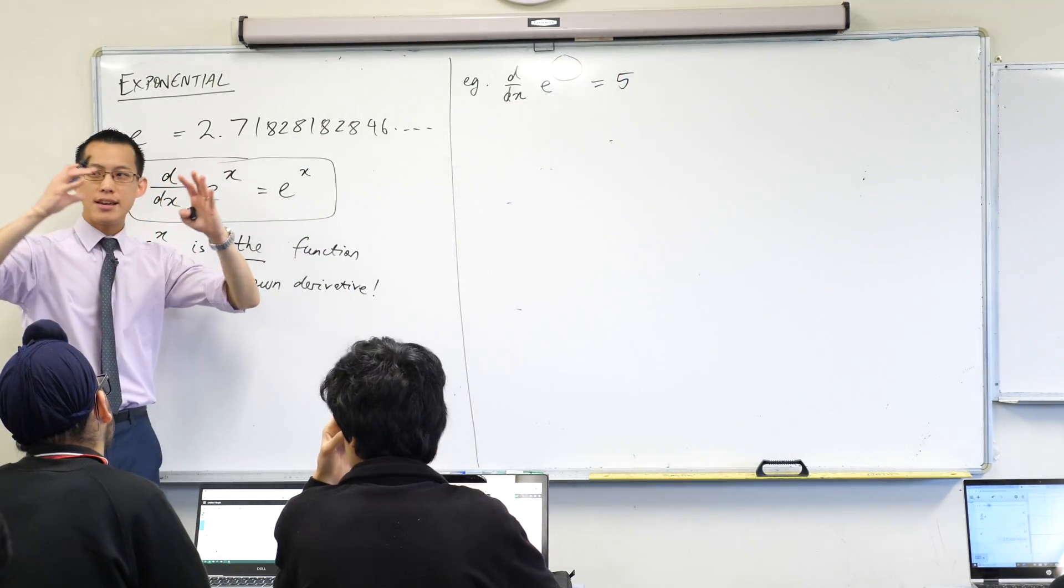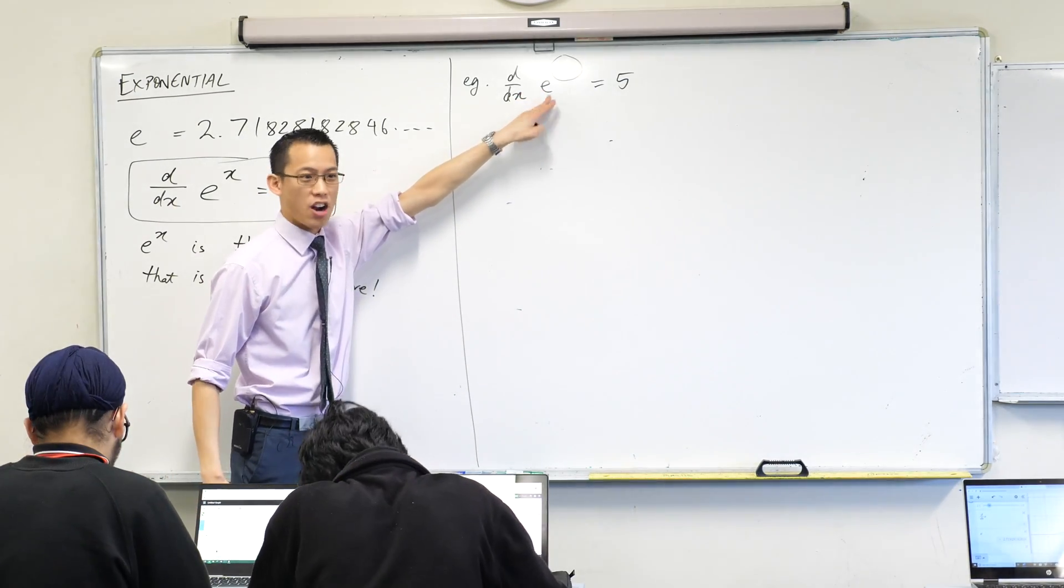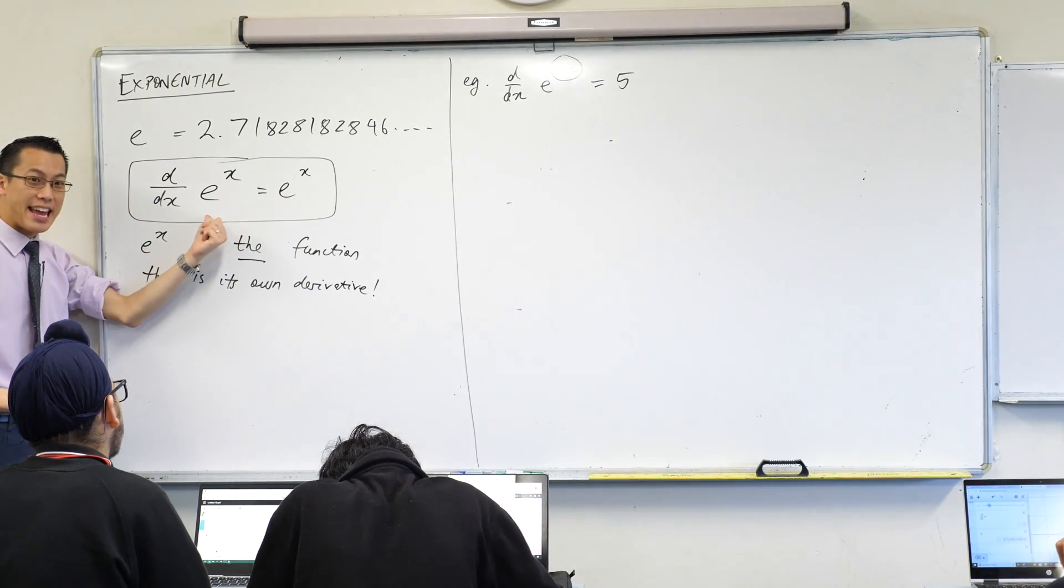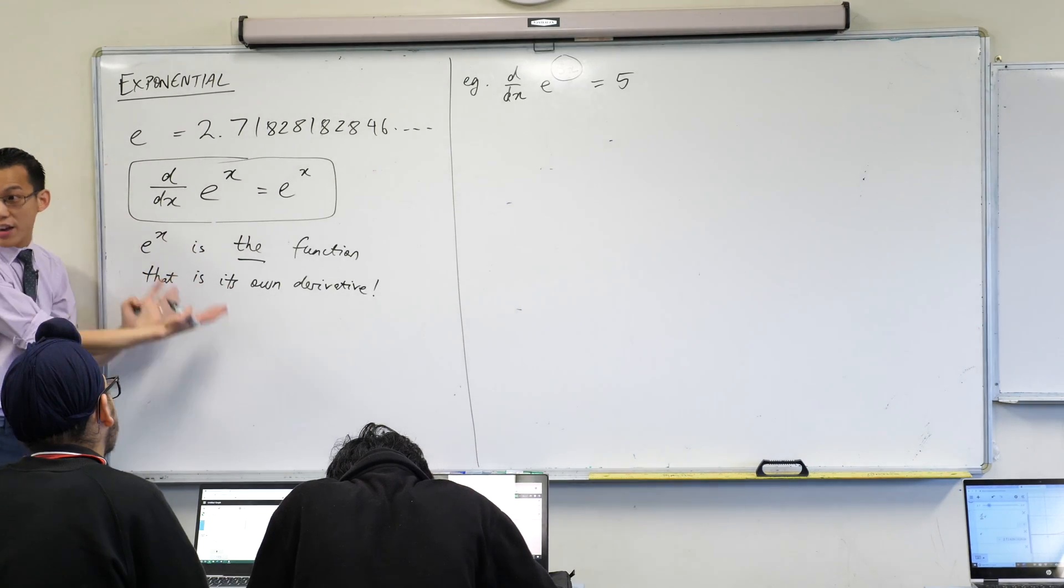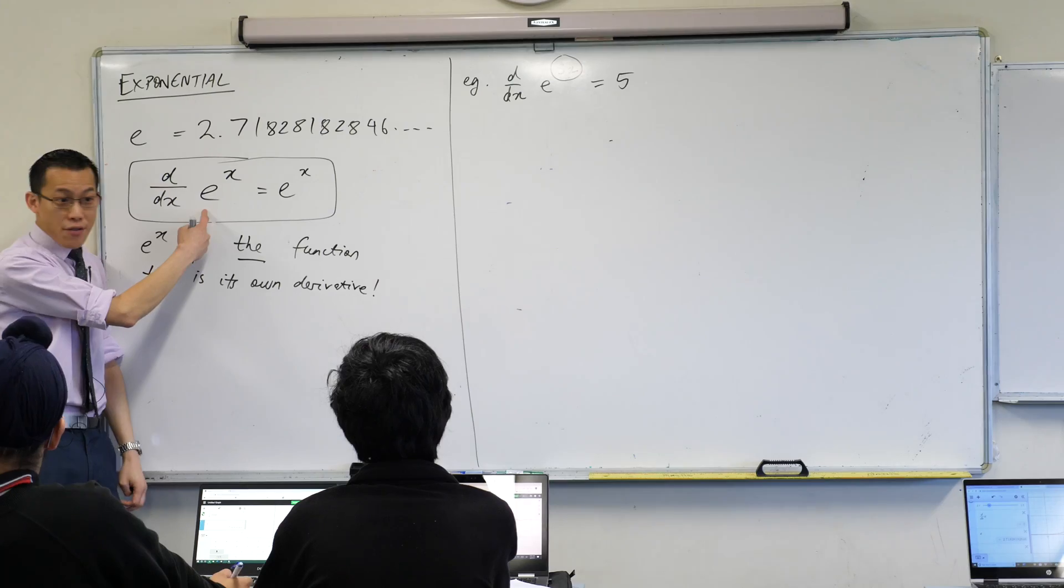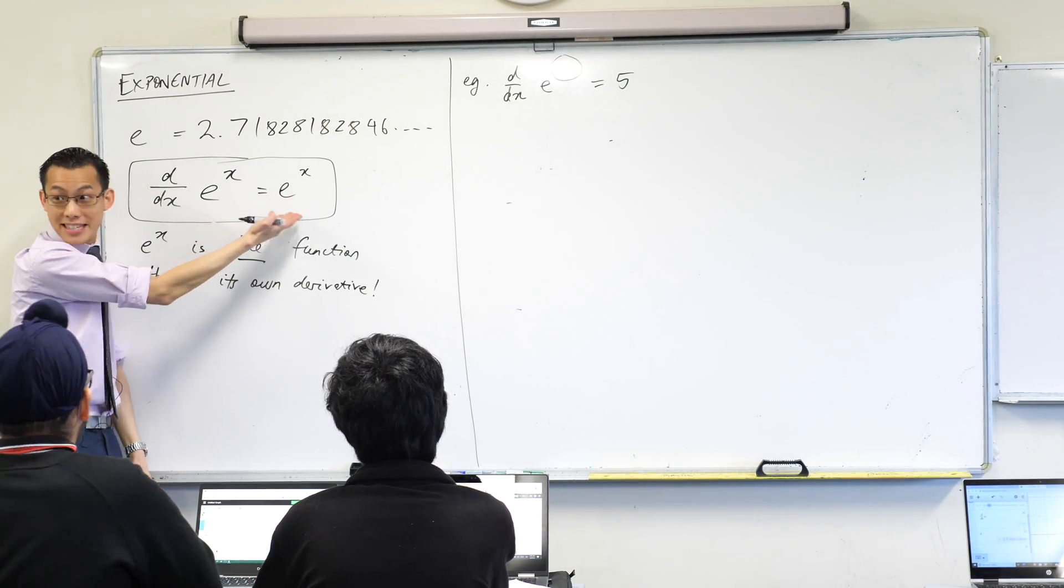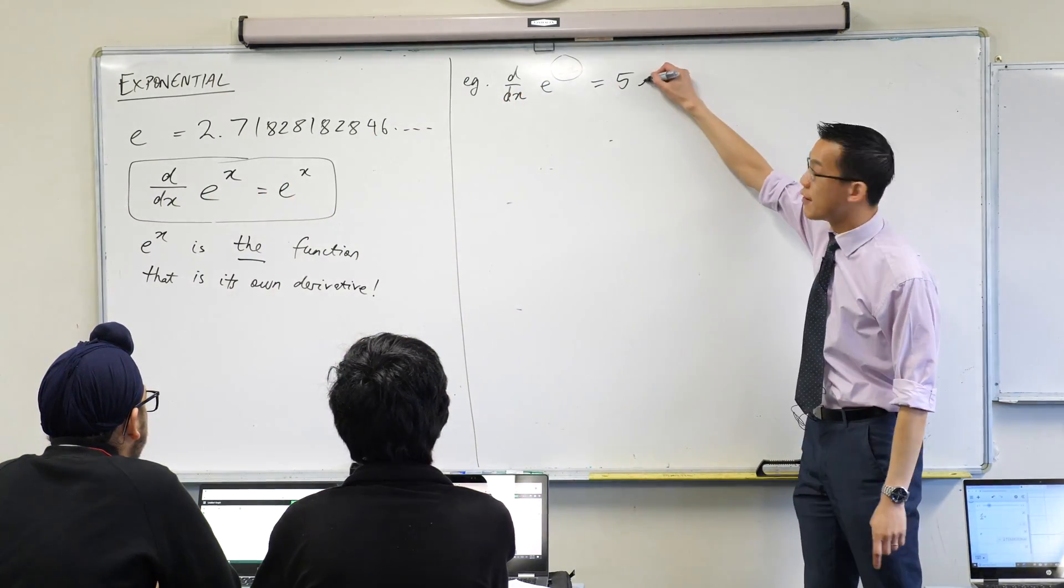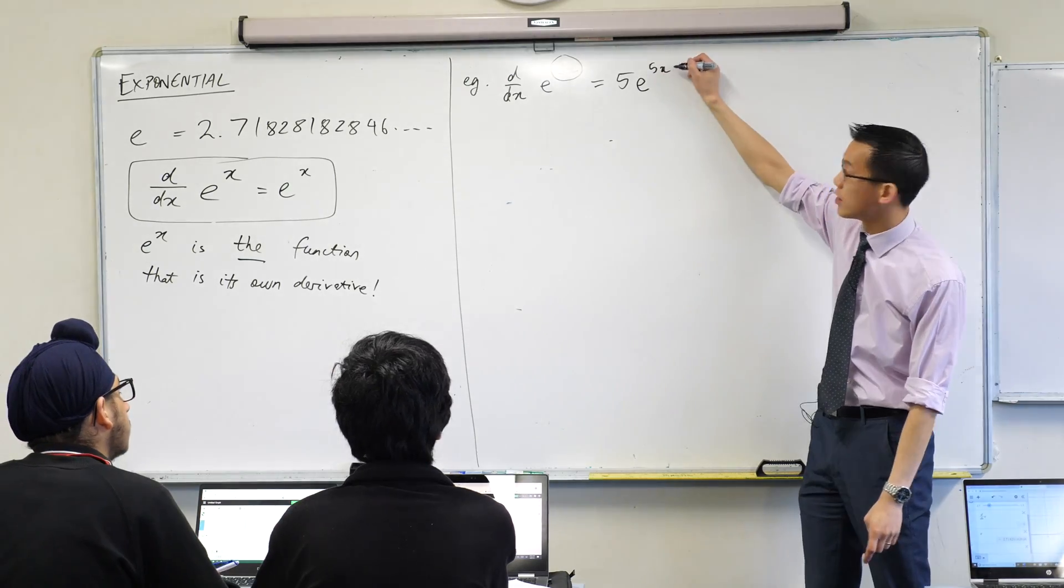Now I'm going to deal with the derivative of the outside. What is the outside? It's e to the power of some stuff. What happens when you differentiate e to the power of some stuff? Think carefully. Remember, this is a unique function. It's different to our polynomials we've been dealing with before. When you differentiate e to the power of some stuff, you get this e. It doesn't change. So when you have a look at this, it doesn't change. You still have e to the power of some stuff. In this case, the stuff is 5x.